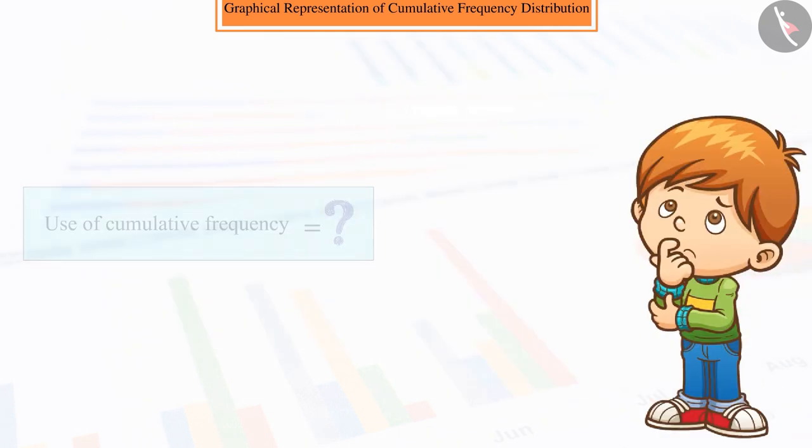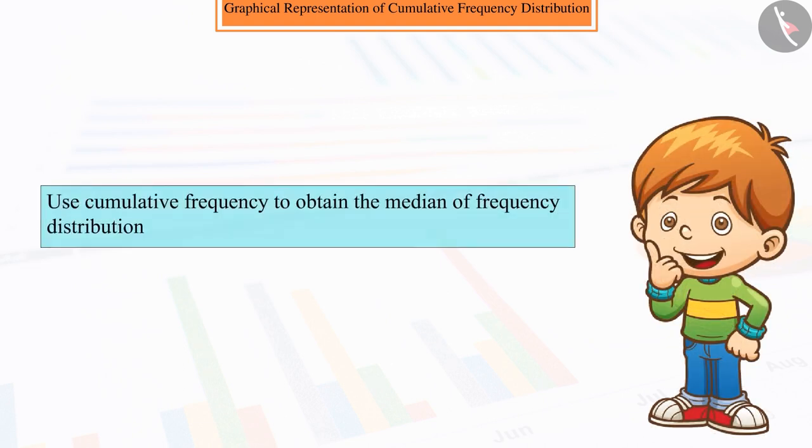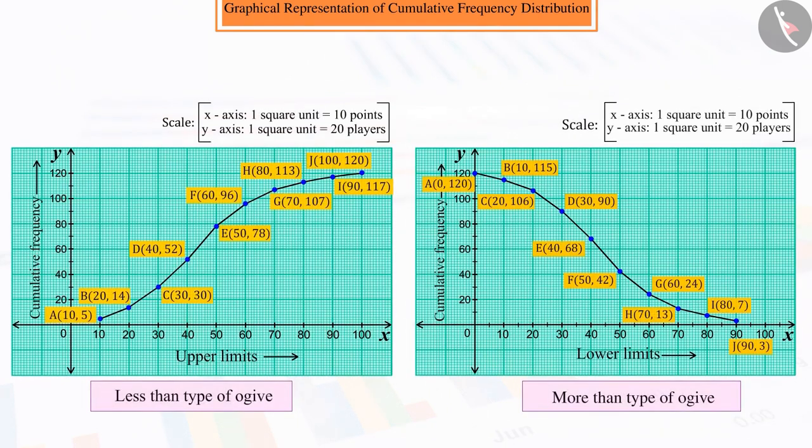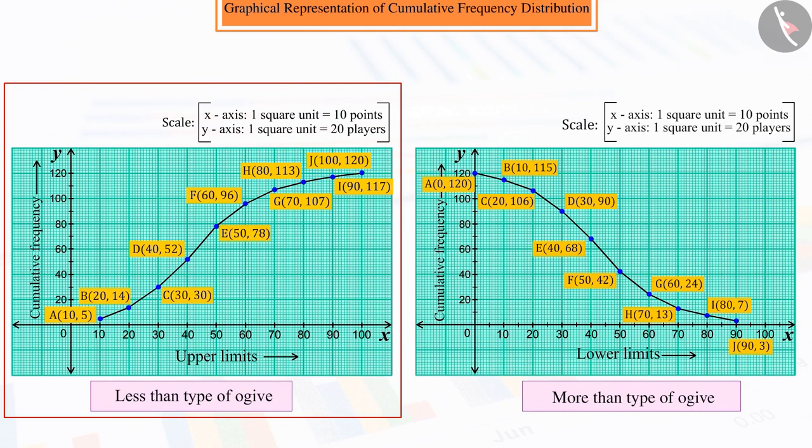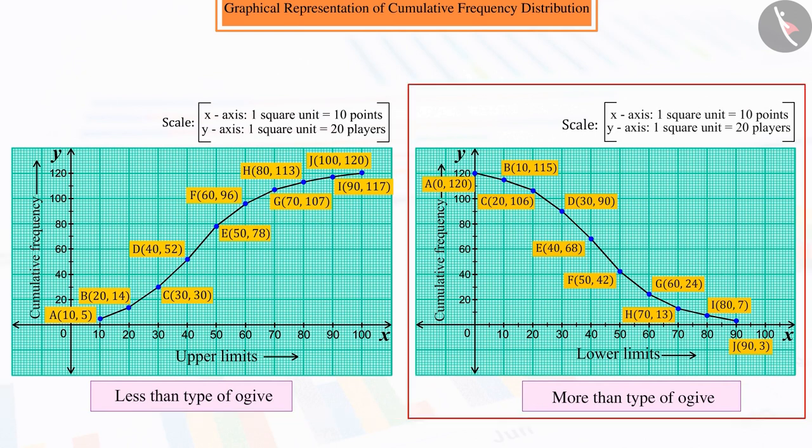Can you guess what do we use cumulative frequency for? Well done! We use cumulative frequency to obtain the median of frequency distribution. Now look at the graph once more and guess whether you can find the median of both the Ogives, i.e., less than type and more than type.